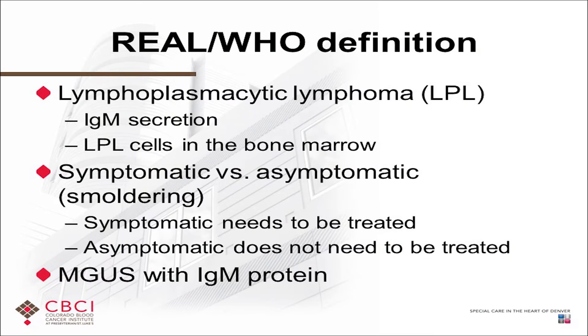How do we determine what is WM versus another type of cancer? Physicians get together and come up with classification systems. In order to call a disease Waldenstrom's macroglobulinemia, certain things have to be present. You have to have certain types of cells in the bone marrow — those are lymphoplasmacytic cells — and importantly, you have to have the presence of an IgM protein in the blood. It's possible to have a lymphoplasmacytic lymphoma that makes an IgG protein instead of IgM, and that's not WM. In order to have WM, you must have the IgM protein.